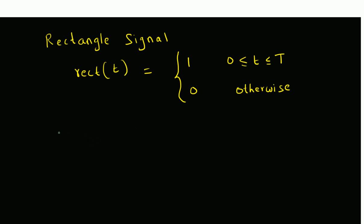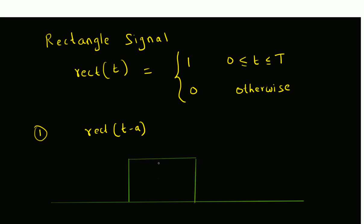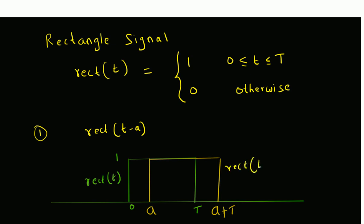The first transformation is a delayed version, that is rect(t minus a). First let us look at the graph of the rectangle function. If it is delayed by value a, it should look like this — the starting point is a and the ending point is a plus T. For the original signal the starting point is zero and the ending point is T, and the value is always one. The green one is the rectangle function and the yellow one is the delayed version, rect(t minus a).